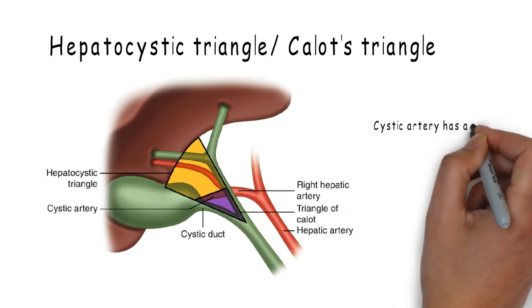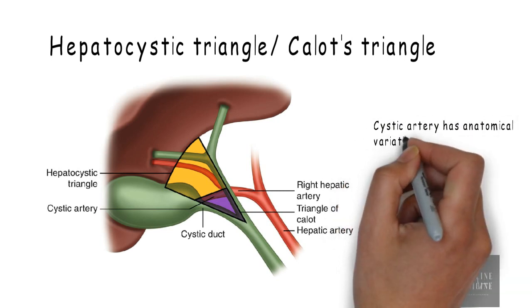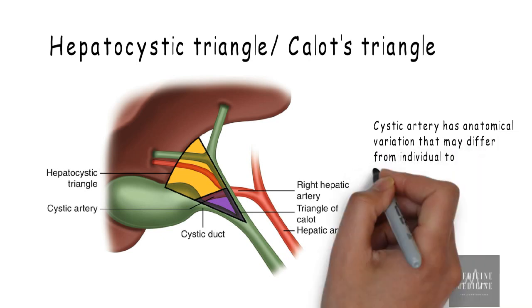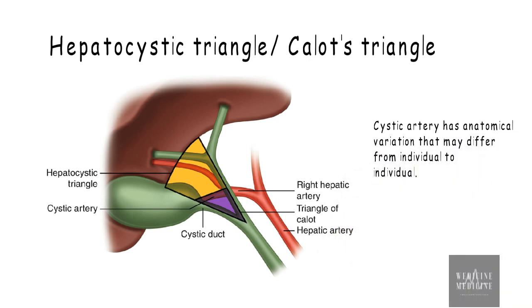Since cystic artery has anatomical variations depending upon individual, the definition for boundaries of Calot's triangle was inconsistent. Therefore, surgeons and anatomicalists preferred using definition of hepatocystic triangle as Calot's triangle which included inferior surface of liver as superior border of triangle, providing a consistent definition for use.